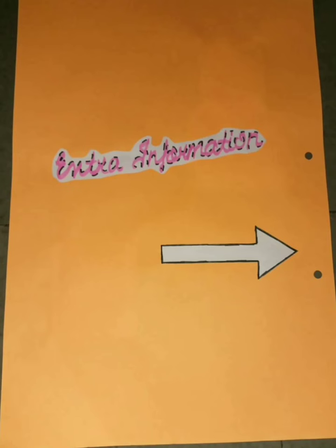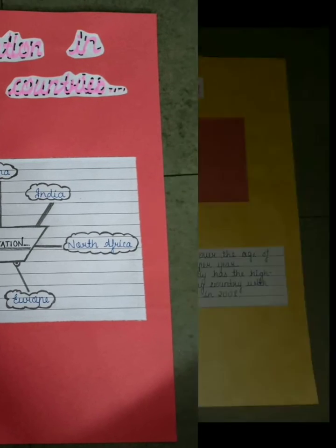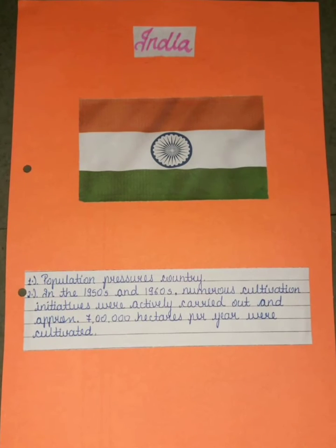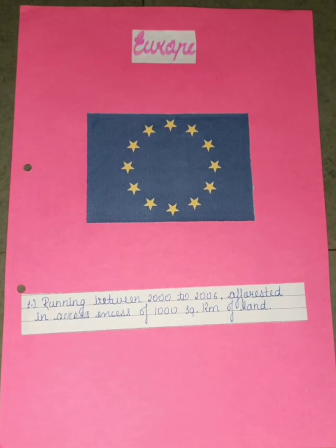These are some images which you can see and get from the internet. What are the consequences of the title of your project? This is some extra information — what is the condition in China regarding afforestation, then in India regarding afforestation, then in North Africa.